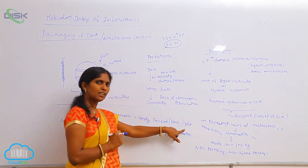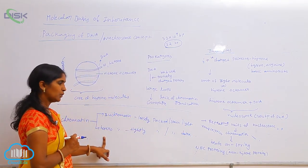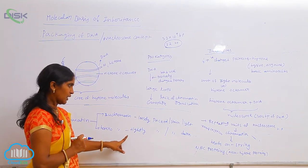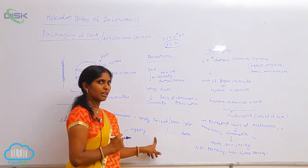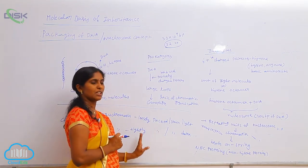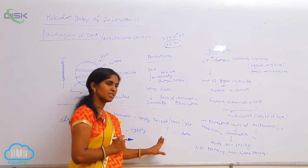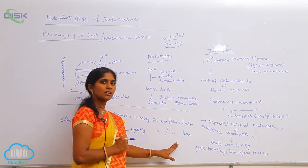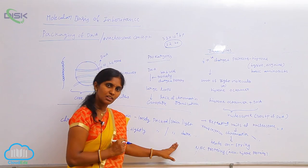Heterochromatin is highly packed, tightly packed within the nucleus, and it gives dark coloration in the presence of DNA stains.